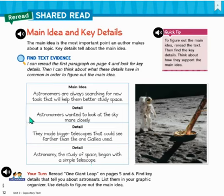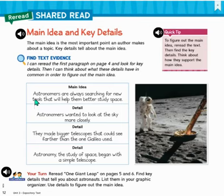These three details were pulled right from the first paragraph on page 4. Using these details, they determined that the main idea was that astronomers are always searching for new tools that will help them better study space.